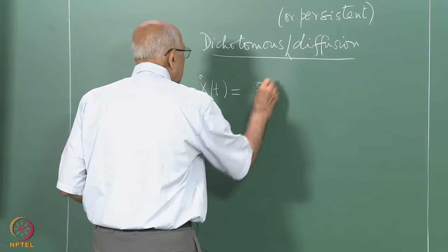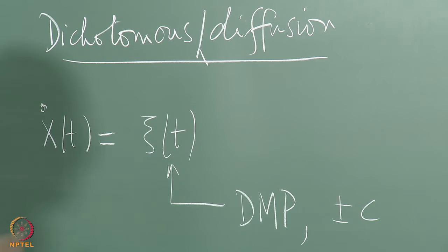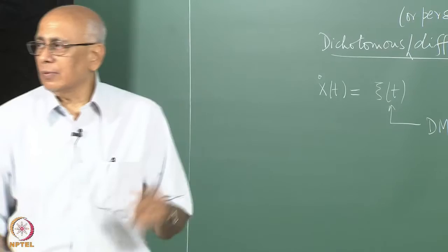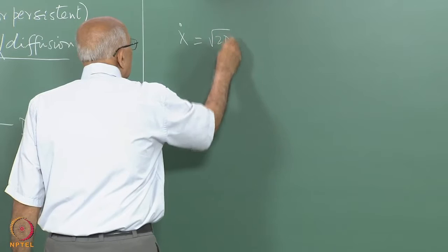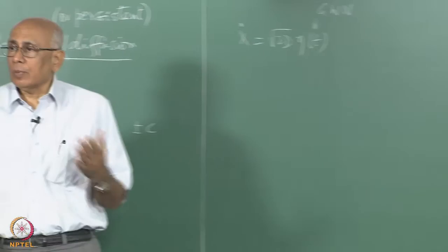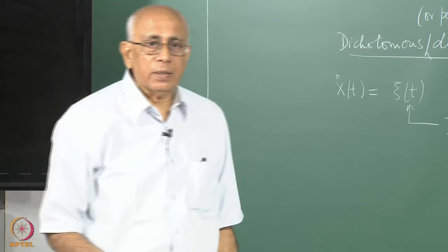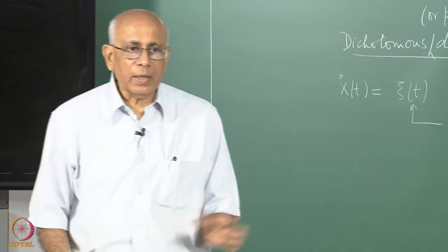So xi of t is a dichotomous Markov process taking values plus C or minus C, and the question is: what are the statistical properties of the process X itself, which is the integral of a dichotomous Markov process? In the usual diffusion problem we had X-dot equal to square root of 2D times eta(t), where eta was Gaussian white noise, and X became a Wiener process. Now, what happens if we integrate dichotomous noise instead?